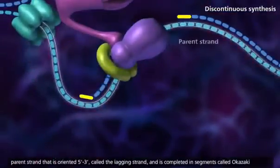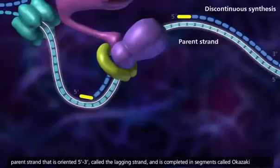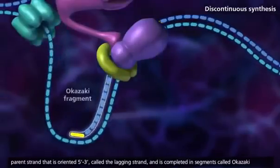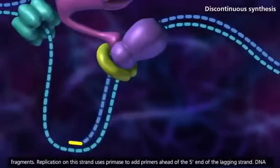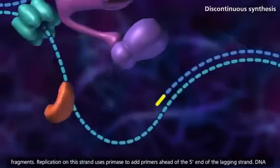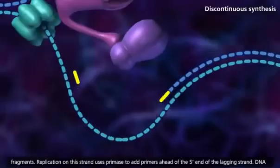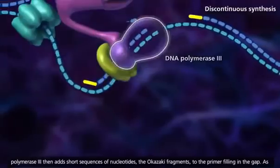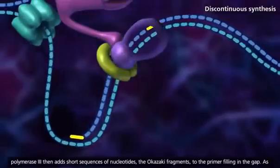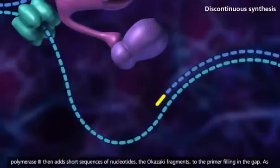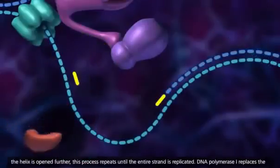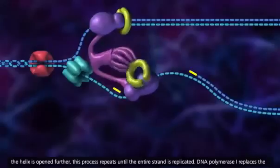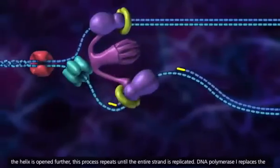Discontinuous synthesis occurs on the parent strand that is oriented 5' to 3', called the lagging strand, and is completed in segments called Okazaki fragments. Replication on this strand uses primase to add primers ahead of the 5' end of the lagging strand. DNA polymerase 3 then adds short sequences of nucleotides, the Okazaki fragments, to the primer filling in the gap. As the helix is opened further, this process repeats until the entire strand is replicated.